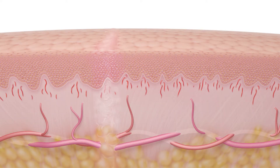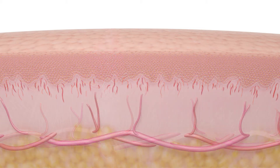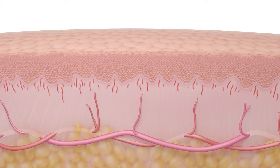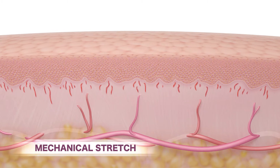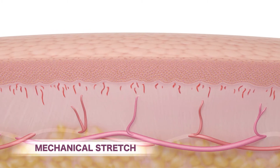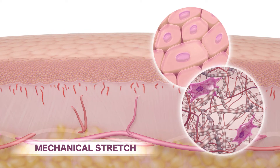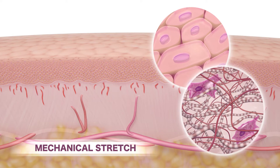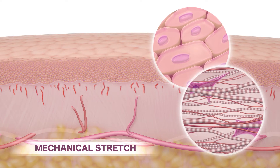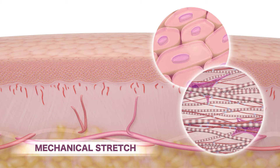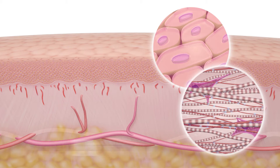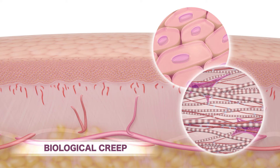When additional tension is introduced, further biomechanical processes come into play. Mechanical stretch causes the tissues to elongate. Skin cells and collagen fibers straighten and align. Elastin fibers microfragment. Once the skin reaches the limits of mechanical stretch, biological creep takes over.